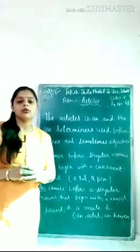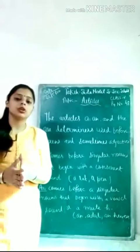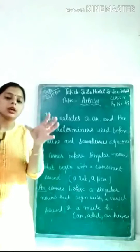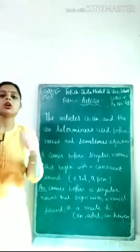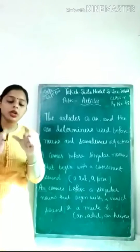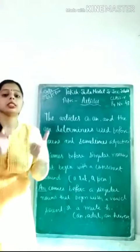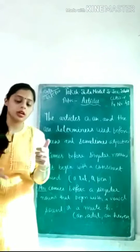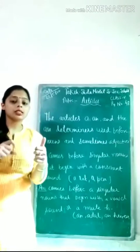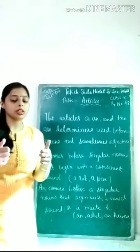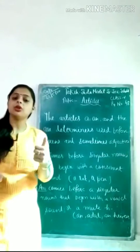Now we will understand where we use The. The is a definite article. Means, for a specific person or thing, or when we use something or someone for the second time, we use The. And where we use A or An? When we use anything or someone for the first time, we use A or An.